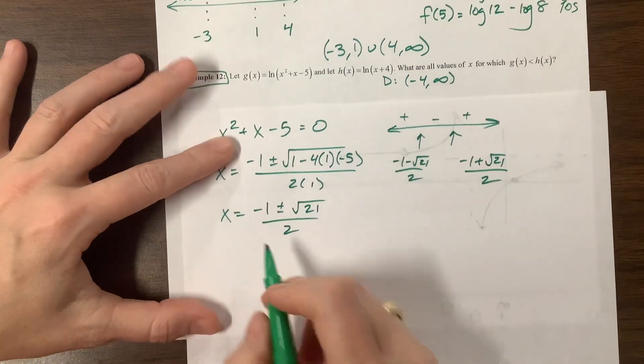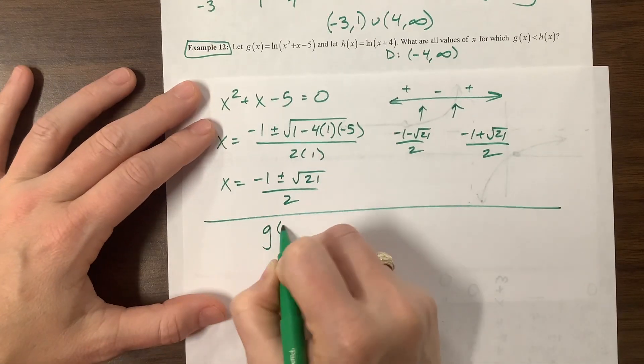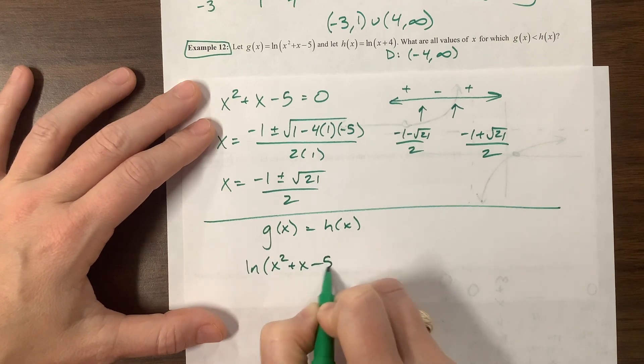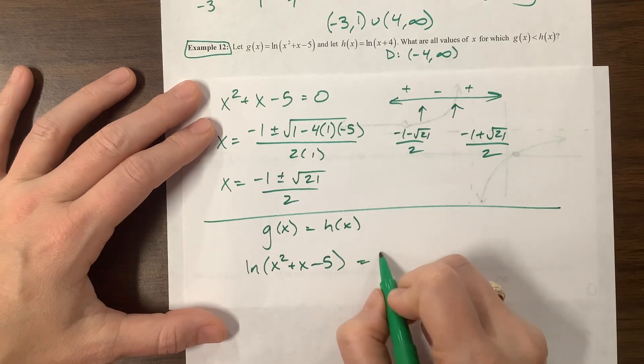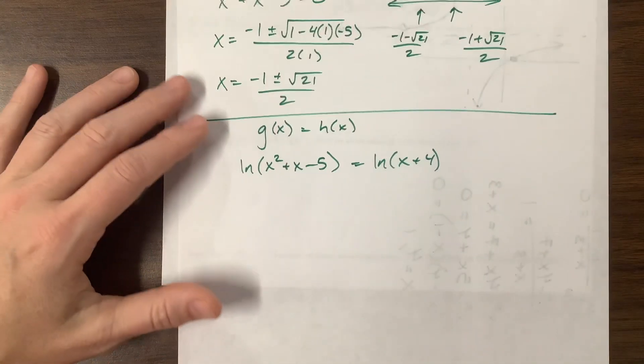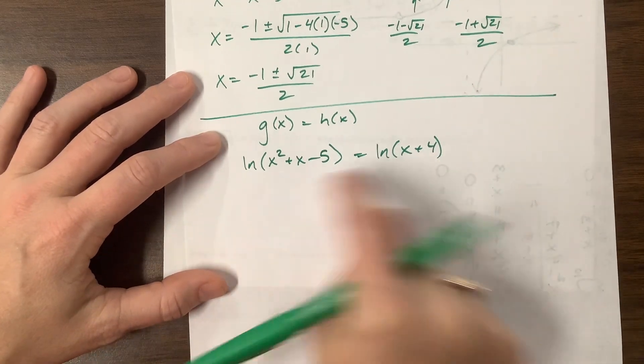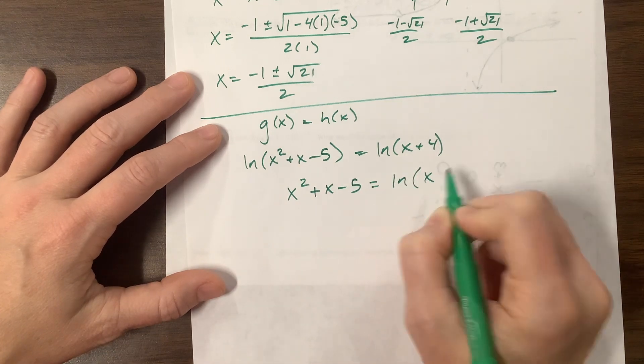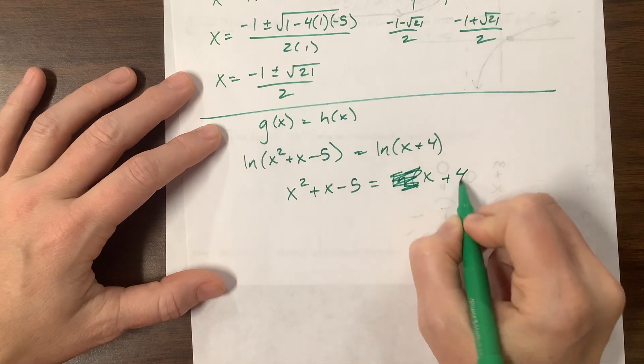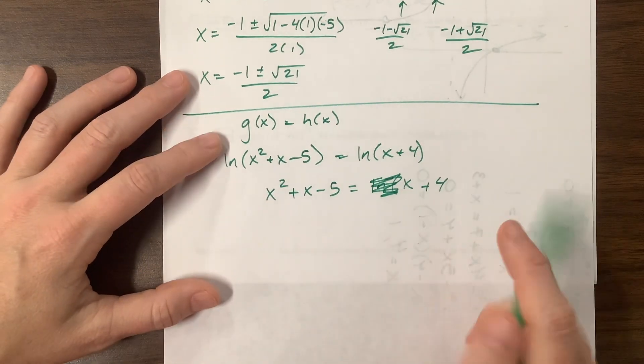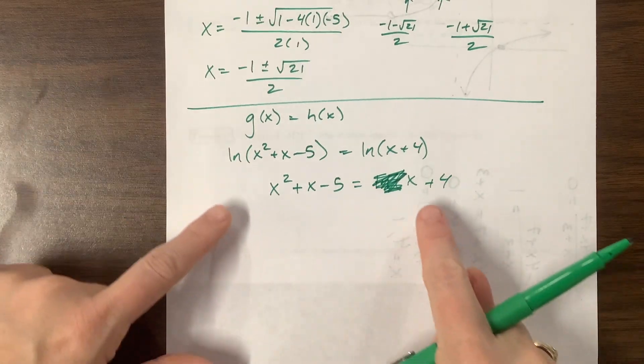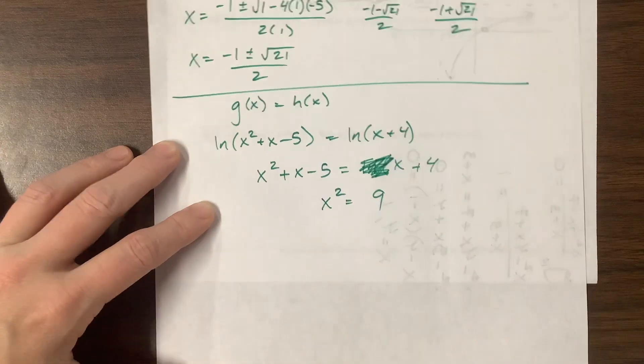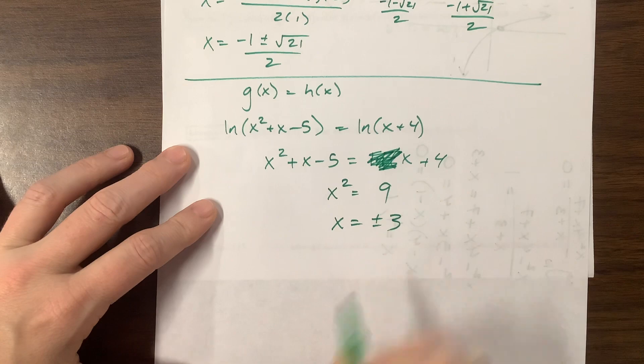To find their intersection, we're going to let g of x equal h of x. This is the natural log of x squared plus x minus 5 is equal to natural log of x plus 4. So when I set these equal, natural log of something equals natural log of something, I can set the somethings equal: x squared plus x minus 5 is equal to x plus 4. We had PSAT today, it was exhausting. What I noticed is I'm about to lose x's, so I'm just going to move this to the other side and get x squared is equal to 9, which means x is equal to either positive or negative 3.